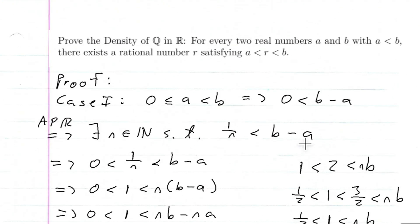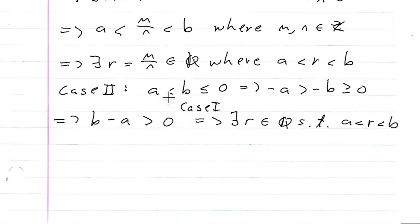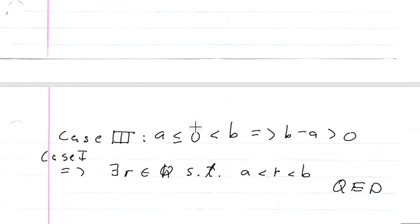So basically for any scenario: where both a and b are bigger than zero or a equals zero; where a and b are both less than zero or b equals zero; and in the last one where a is negative or equal to zero and b is positive — we know that in all three of those cases there is going to exist a rational number between those two real numbers. And that's what we set out to do.